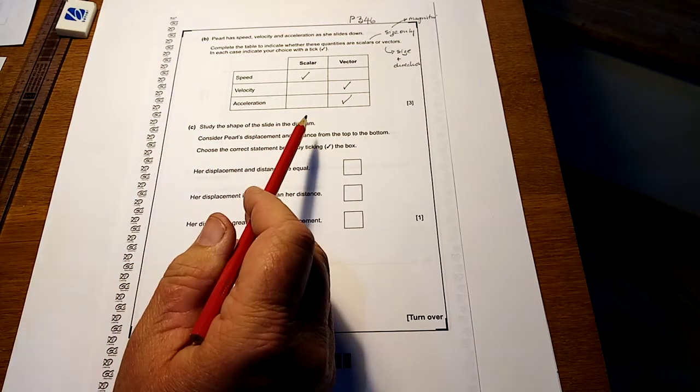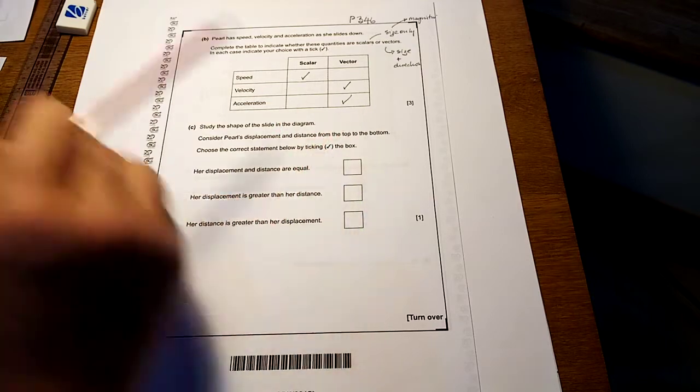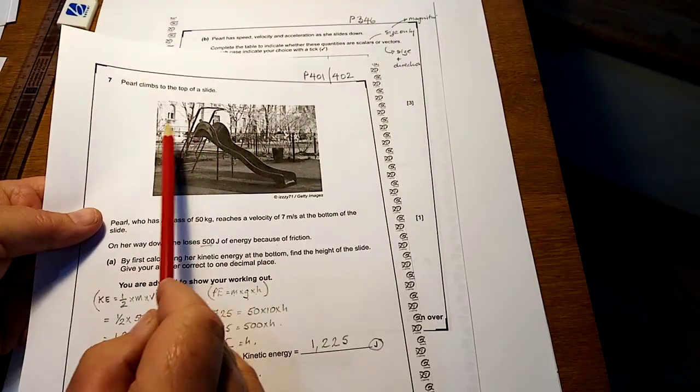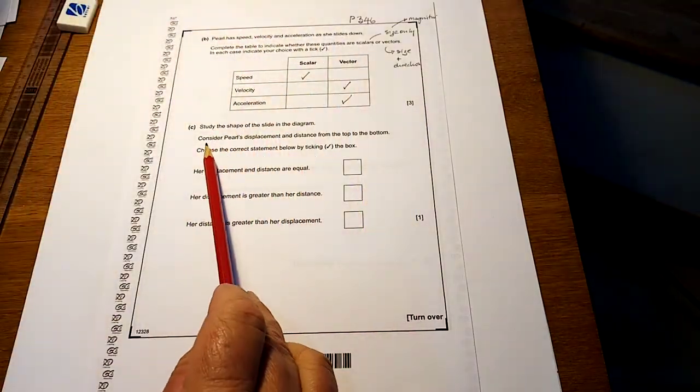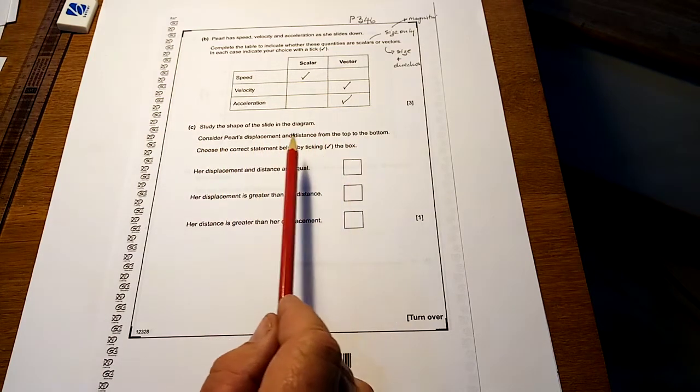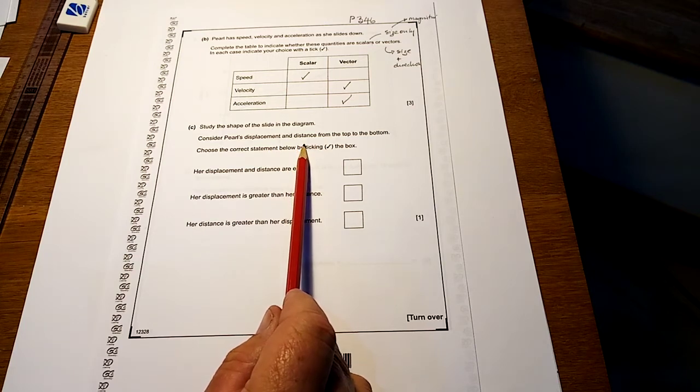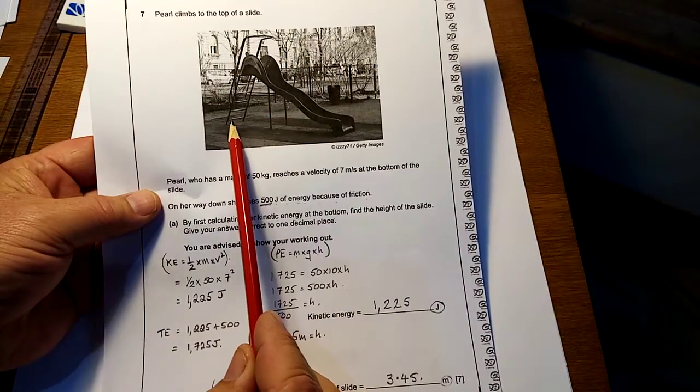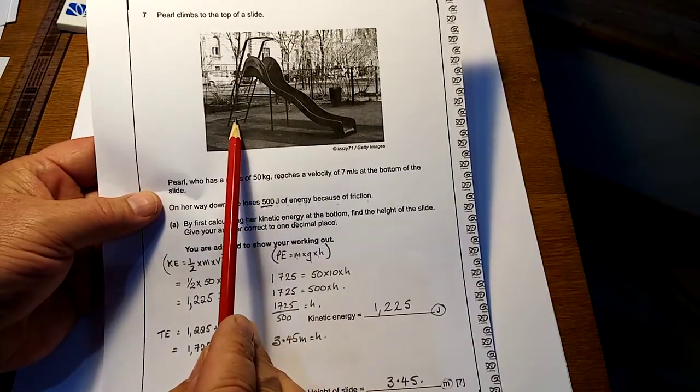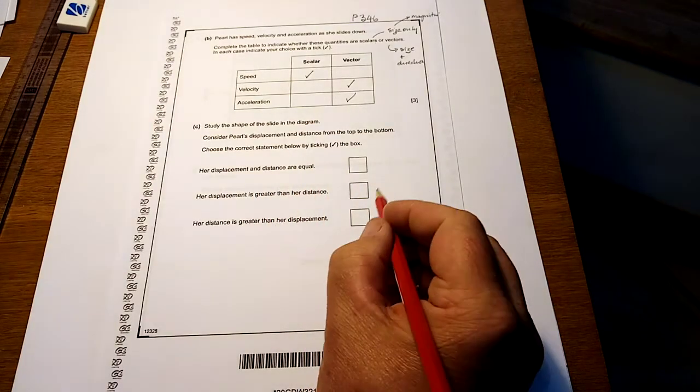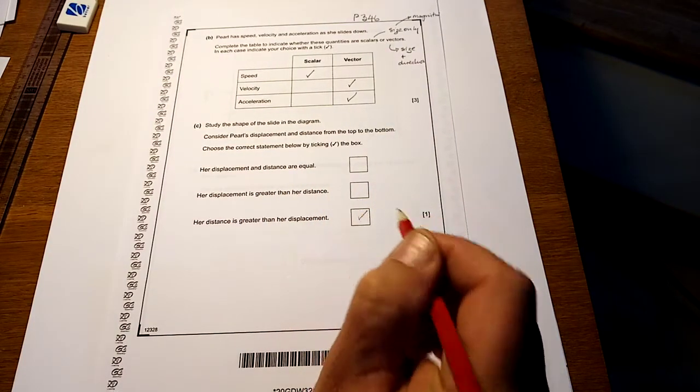Study the shape of the slide in the diagram. Well, let's have a look at it. Sort of a curvy shape, see the curvy shape of it there? Right. It says, consider Perl's displacement and distance from the top of the bottom. Choose the correct statement below. Now, displacement and distance are very similar, but they are not the same thing. She might have went five metres due east from there to there, but she might have done six metres doing it. Fair enough. So, the distance is greater than our displacement. One mark.